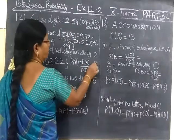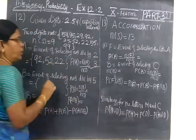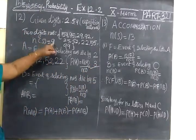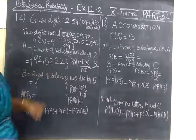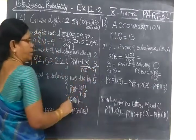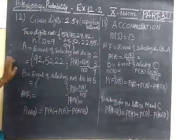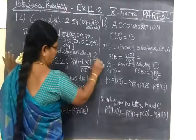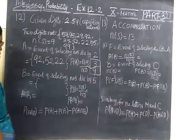So 1, 2, 3, three by total number of sample space S is given as 9. So 3 by 9. Don't cancel it. Finally we can cancel the number. So you just mark it, 3 by 9.